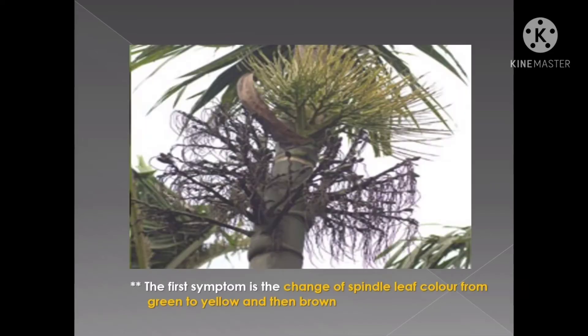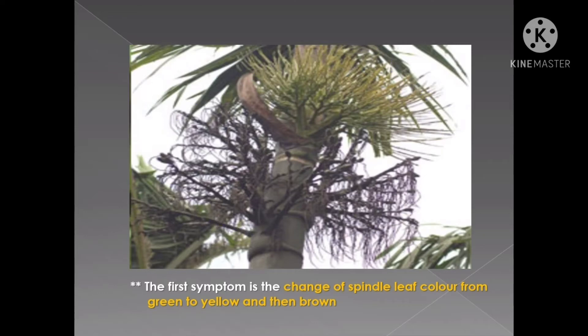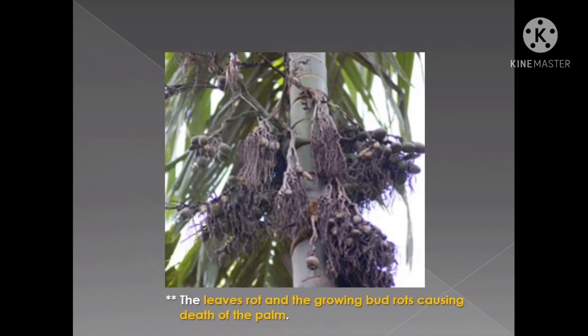Let us discuss the major symptoms of the disease. The first symptom is the change of spindle leaf colour — as you can see in the image — from green to yellow colour, and then it turns to brown colour. The leaves and growing bud rot, which results in death of the palm.